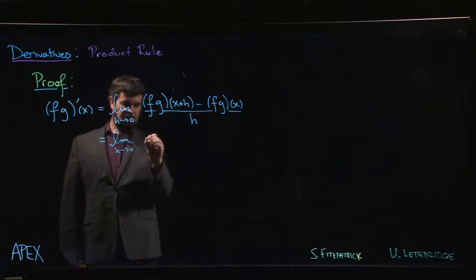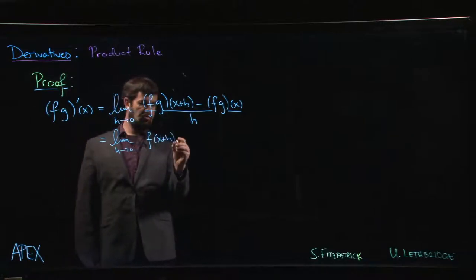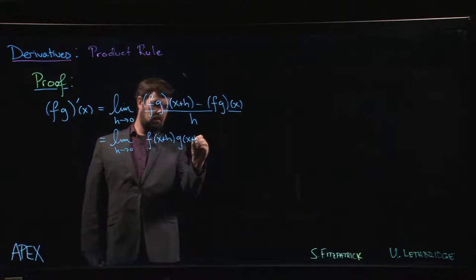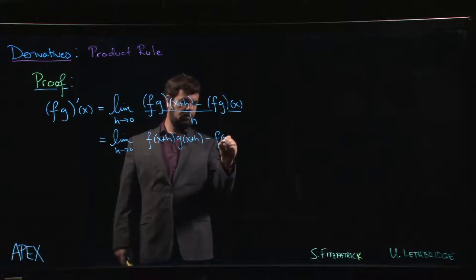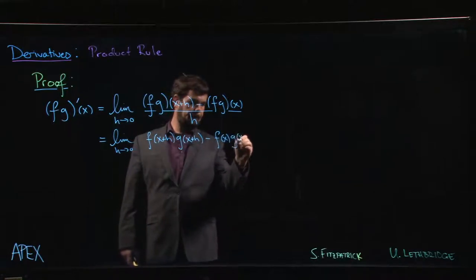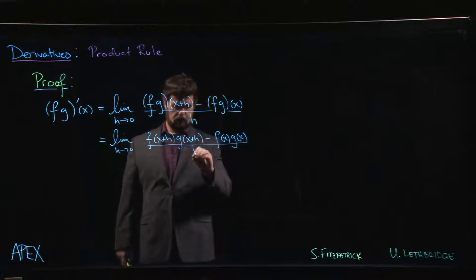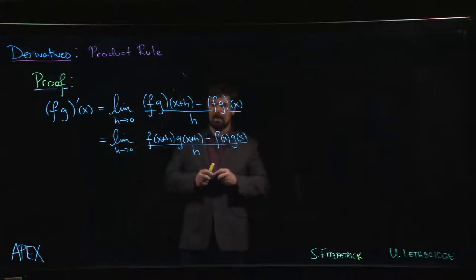Function multiplication is defined pointwise, so f times g at x plus h is simply f at x plus h times g at x plus h, and this is just f of x times g of x all over h.